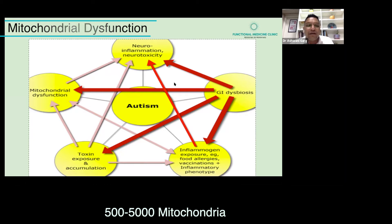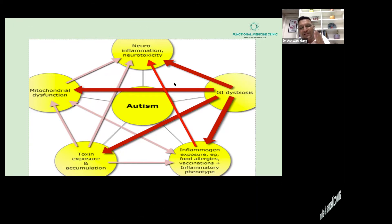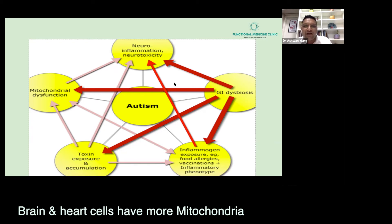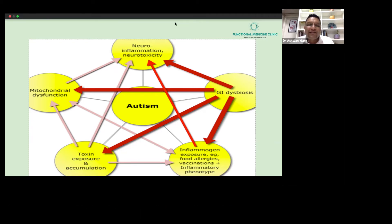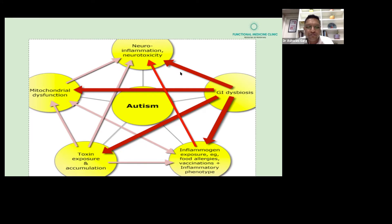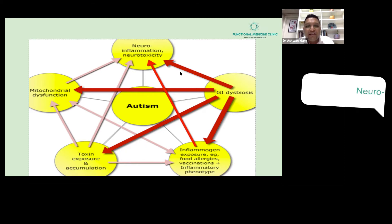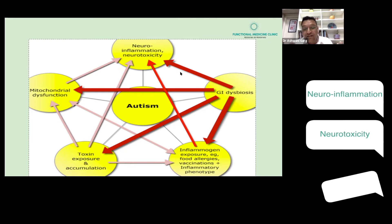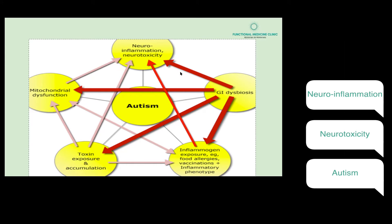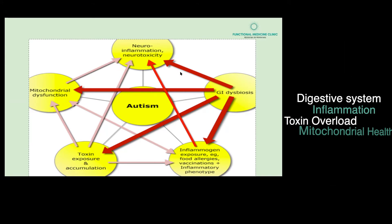The next very important factor is mitochondrial function. Each cell of ours has about 500 to 5,000 mitochondria. Brain cells and heart cells have more mitochondria; muscle cells also have more, depending on the function they perform. If our energy production mechanism — the mitochondria — is dysfunctional, our abilities to function are compromised, leading to neuroinflammation, neurotoxicity, autism, and other disabilities.